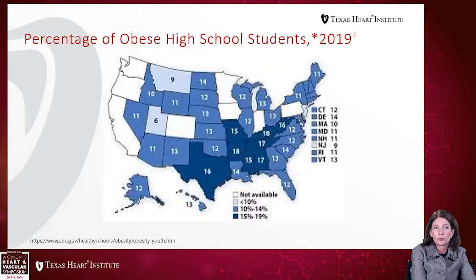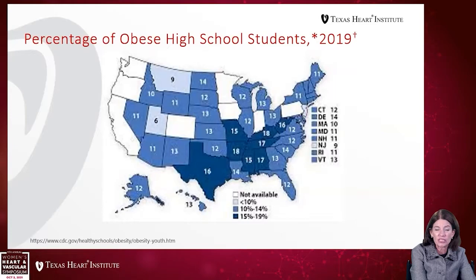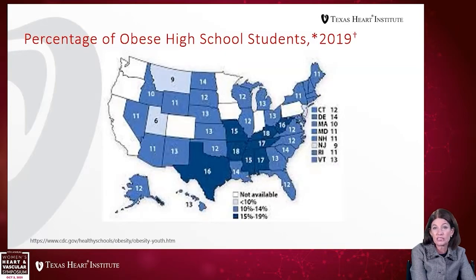Looking at the percentage of obese high school students from 2019, the deepest purple codes for obesity rates of 15 to 19 percent. The same states with high adult obesity also have high levels of obese high school students, which is a harbinger of the future, as these teenagers will continue — if unabated — to become very obese adults, increasing the need for medical care.